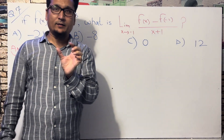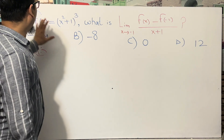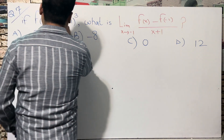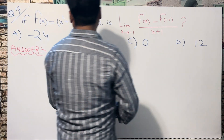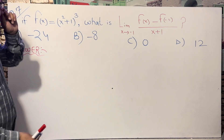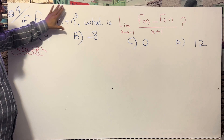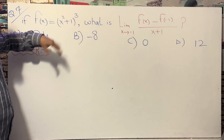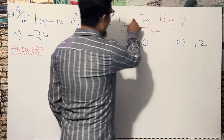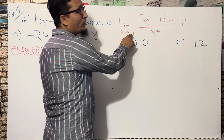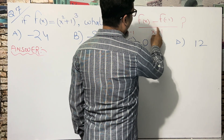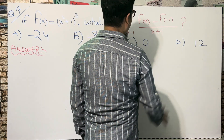The function is given — it's a polynomial equation: (x² + 1)³. You have to find the limit as x tends to minus one of [f(x) − f(−1)] divided by (x + 1).